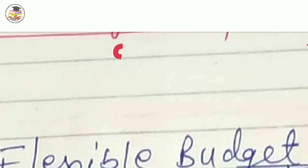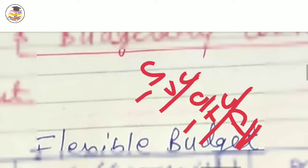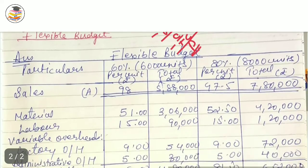Sale minus variable cost gives contribution, then contribution minus fixed cost gives your profit. So I will write sales first. Sales — I will total it. Now, you may ask: how to make the sales value? I will tell you now.